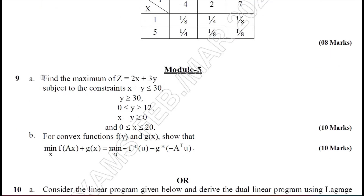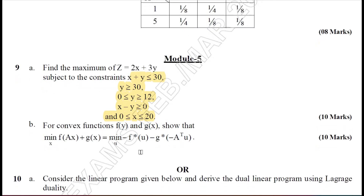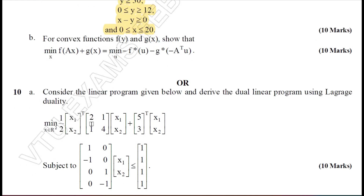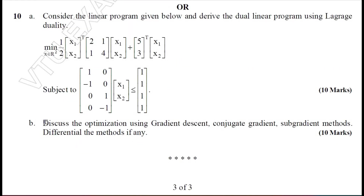Moving on to Module 5, the last module. Question 9A: find the maximum of z = 2x + 3y subject to the given constraints. Question 9B: for the convex function f(y) and g(x), show that the given inequality holds — it carries 10 marks. Question 10A: given a linear program, derive the dual linear program using Lagrange duality. Question 10B is on definitions — discuss optimization using gradient descent, conjugate gradient, subgradient methods, and differential methods. You can define those methods.